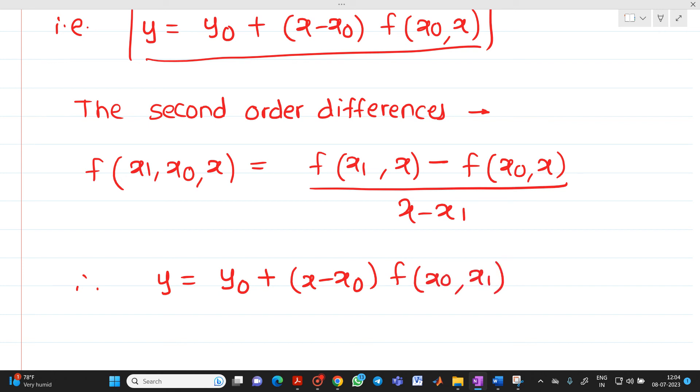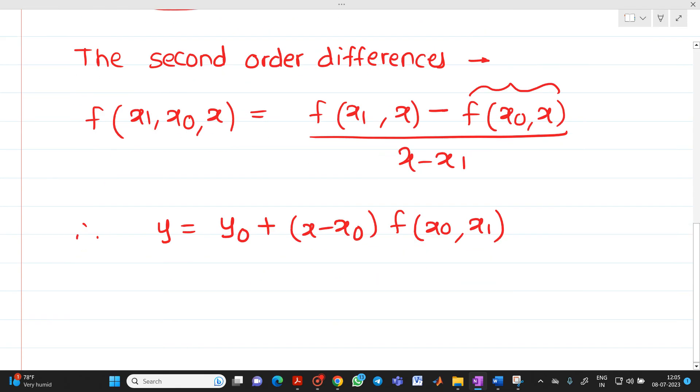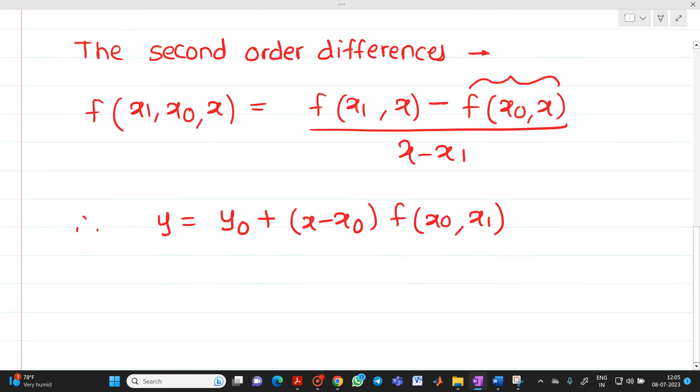What we are doing? We are putting this f of x0 comma x value here by doing some rearrangements. So by doing some rearrangements, directly I am writing this equation as plus x minus x0 into x minus x1 into f of x1 comma x.